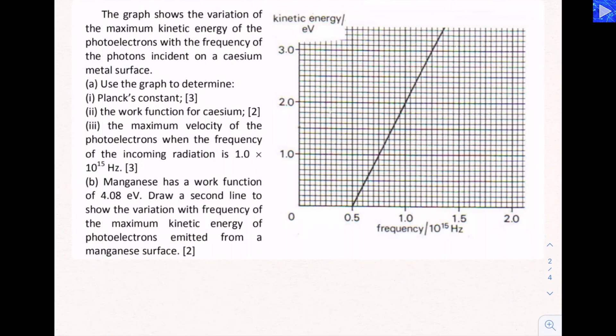Hi, in this video I'll be covering some more questions on photons. The first question concerns this graph which shows us the maximum kinetic energy of photoelectrons versus the frequency of the incident radiation or the frequency of the photons incident on a cesium metal surface.